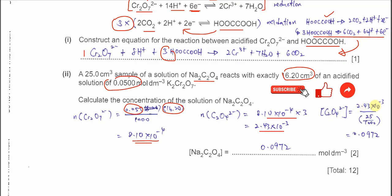The volume of sodium ethanedioate solution is 25 cm³ = 0.025 dm³. Therefore, concentration = 2.43 × 10⁻³ / 0.025 = 0.0972 mol dm⁻³. This is the concentration of the sodium ethanedioate solution.